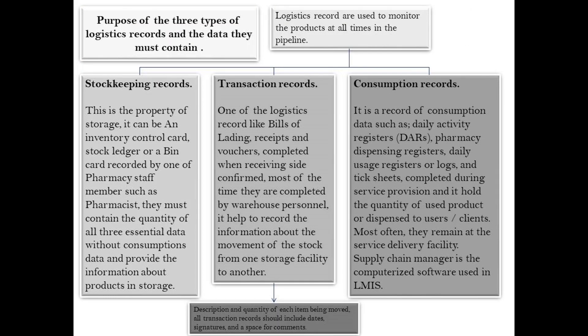Purpose of the three types of logistics records and the data they must contain: Logistics records are used to monitor the products at all times in the pipeline. Stock keeping records are the property of storage — they can be an inventory control card, stock ledger, or a BIN card recorded by pharmacy staff such as a pharmacist. They must contain the quantity of all three essential data items and provide information about products in storage.